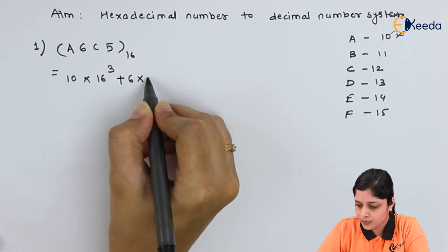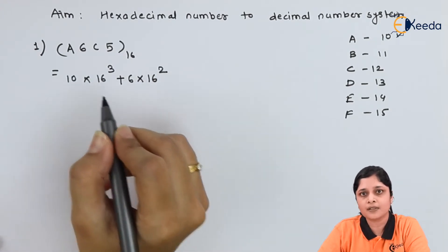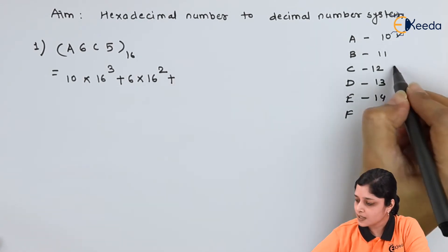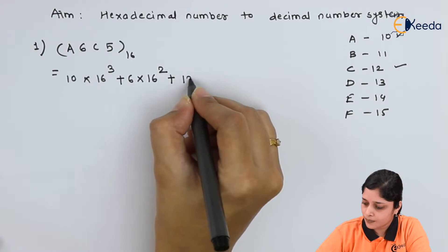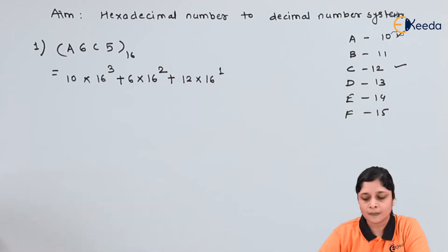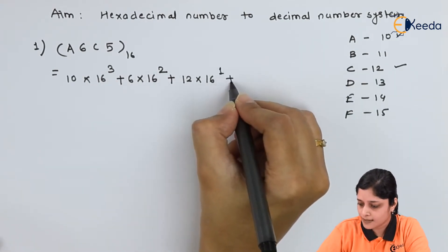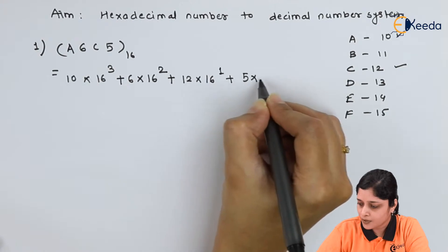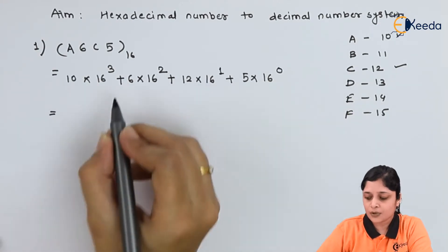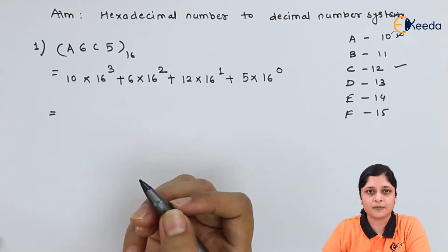Plus 6 into 16 rest to the power 2. You have to decrease the order. Plus C, value of C you can see here, 12. 12 into 16 rest to the power 1. Here power is 3, 2, and 1. Plus 5 into 16 rest to the power 0. You should know this expression.